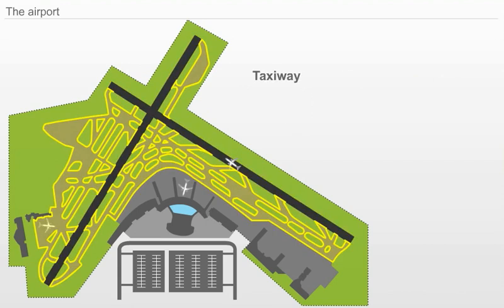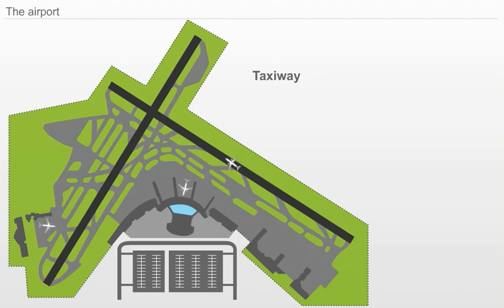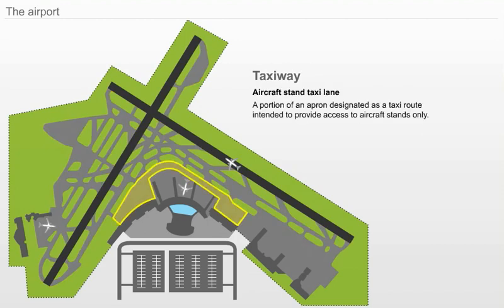Taxiway. A defined path on a land aerodrome, established for the taxiing of aircraft and intended to provide a link between one part of the aerodrome and another, including: A. Aircraft Stand Taxi Lane — a portion of an apron designated as a taxi route intended to provide access to aircraft stands only.